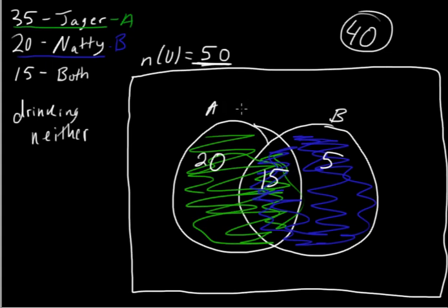Either way, they're represented out here as the 10 students drinking neither of these, and that solves your problem.